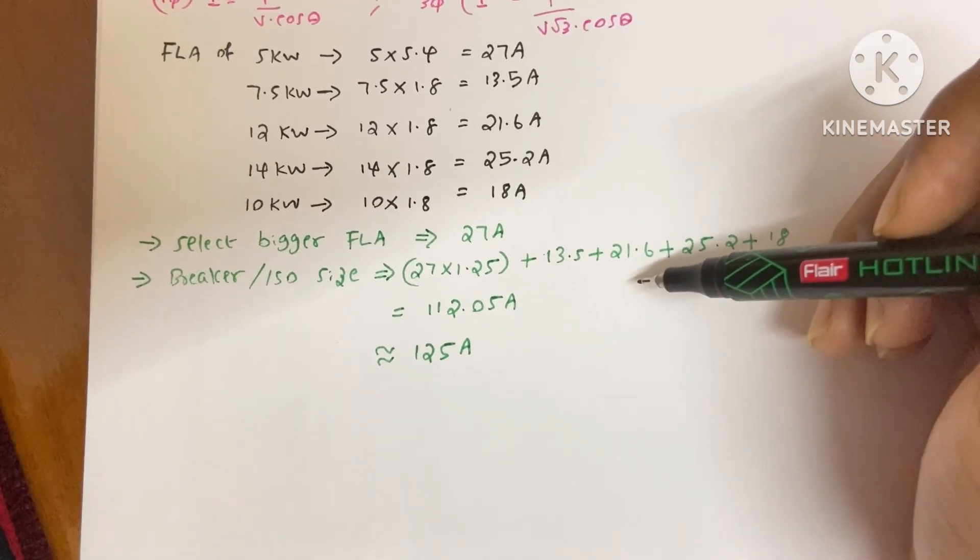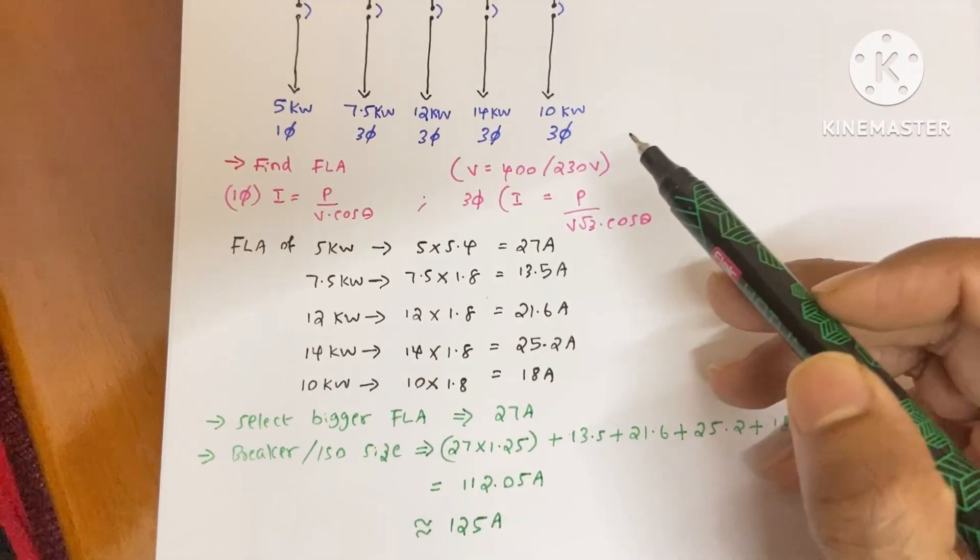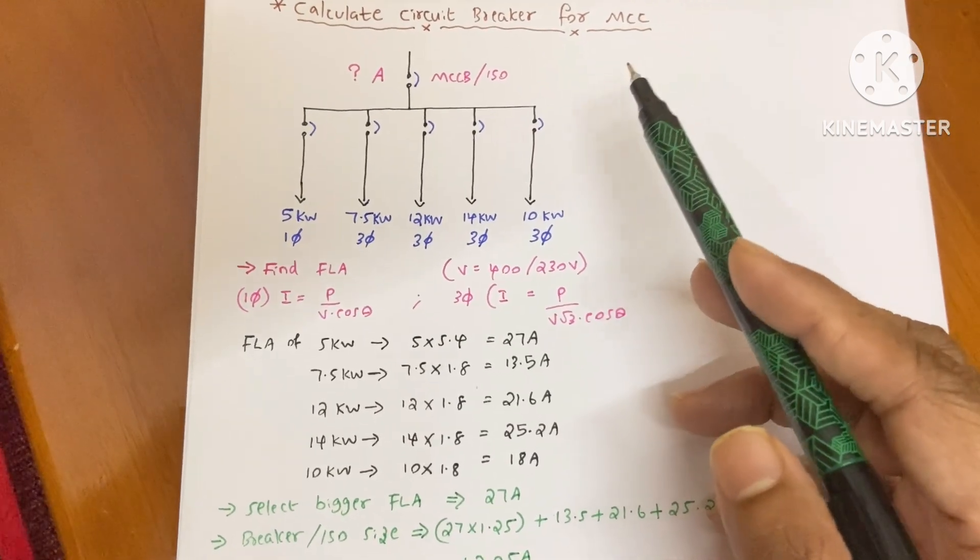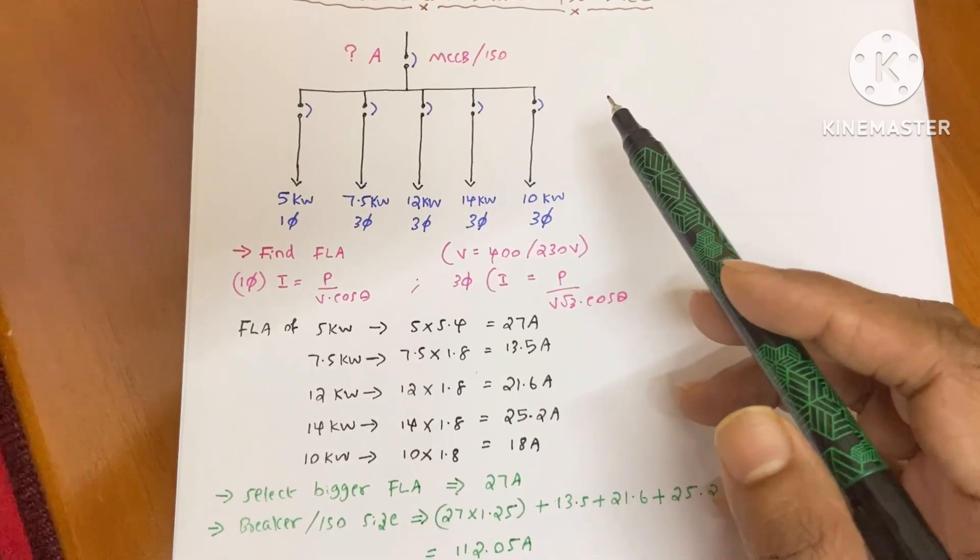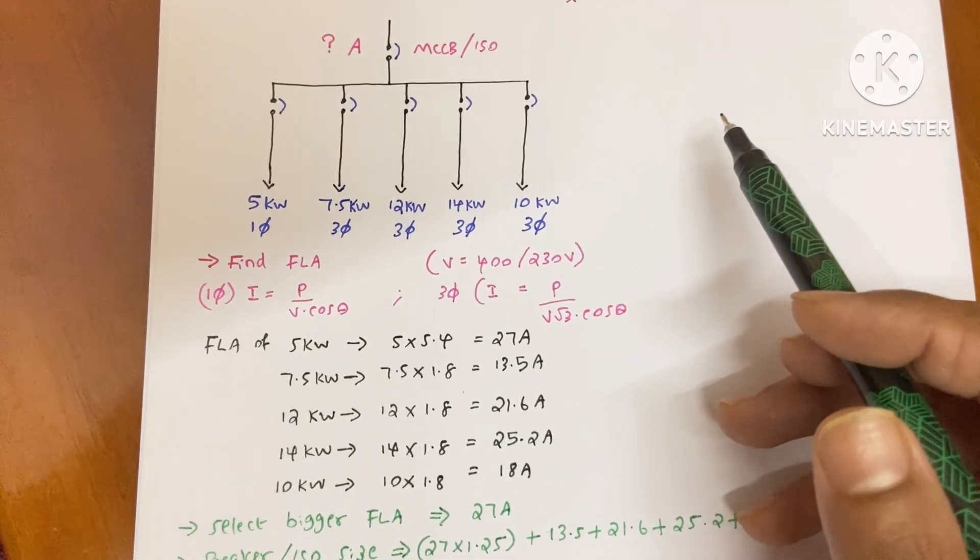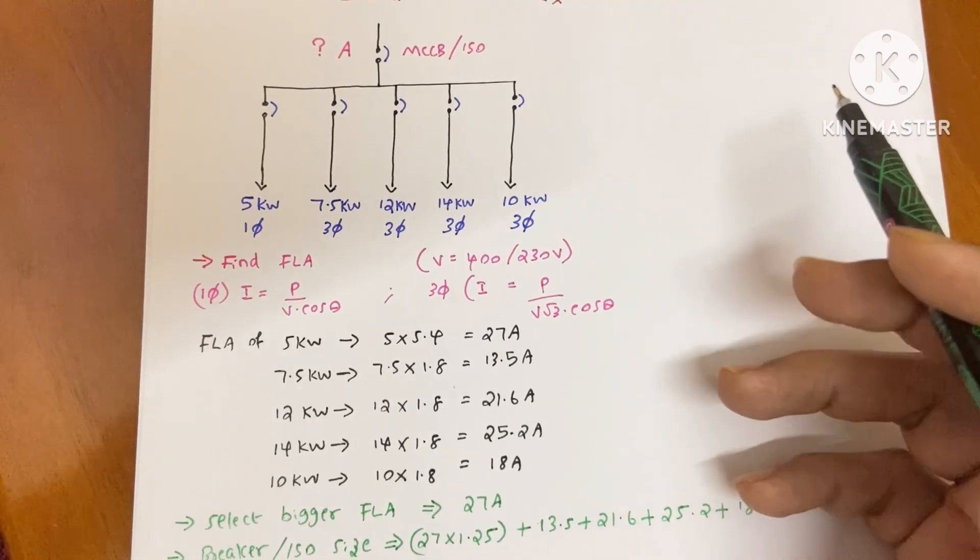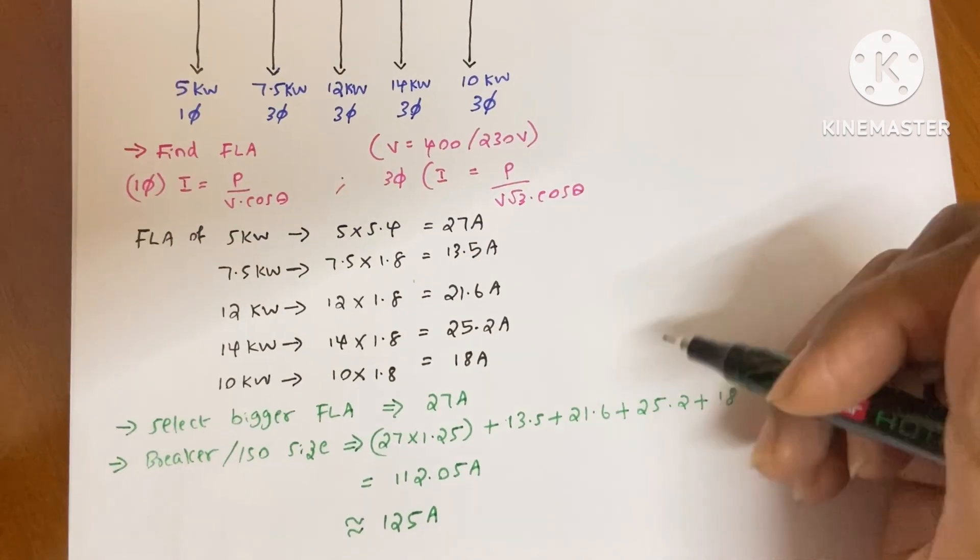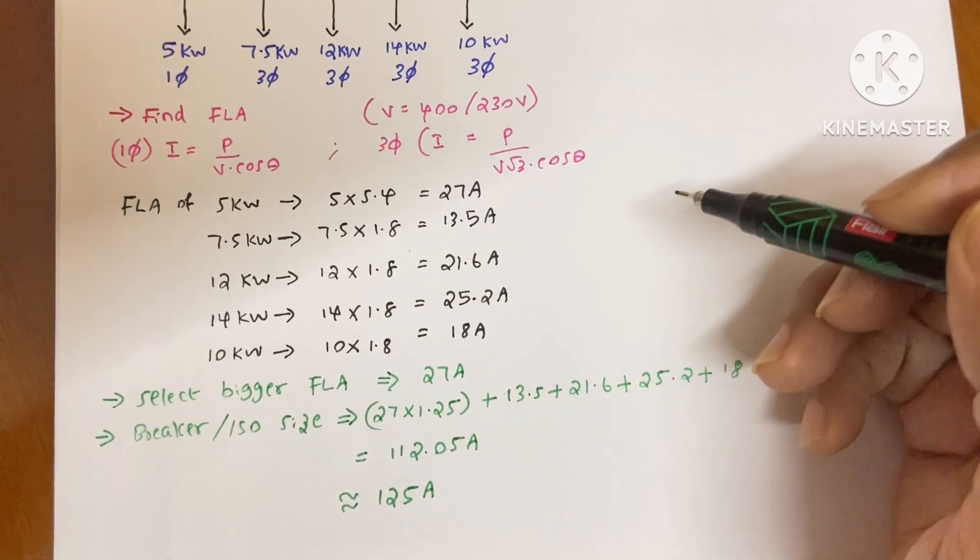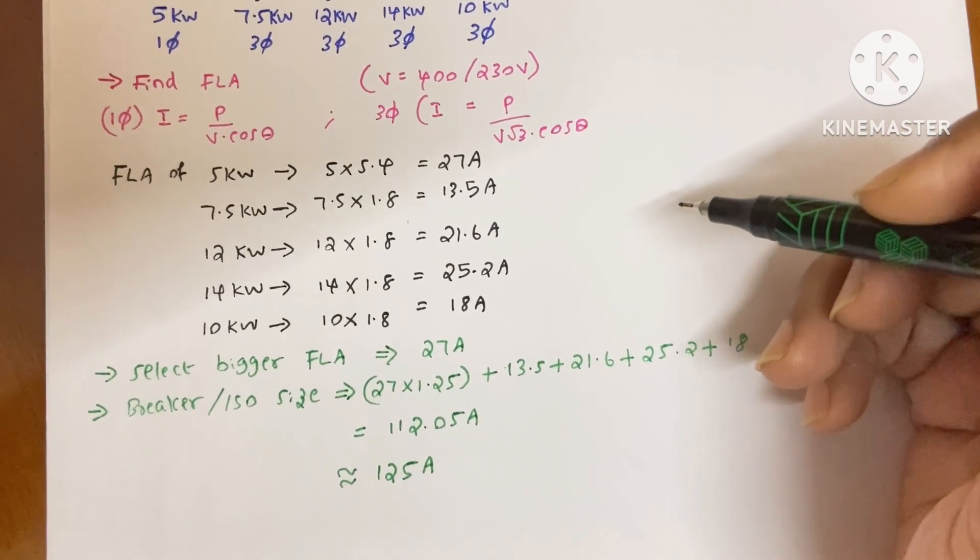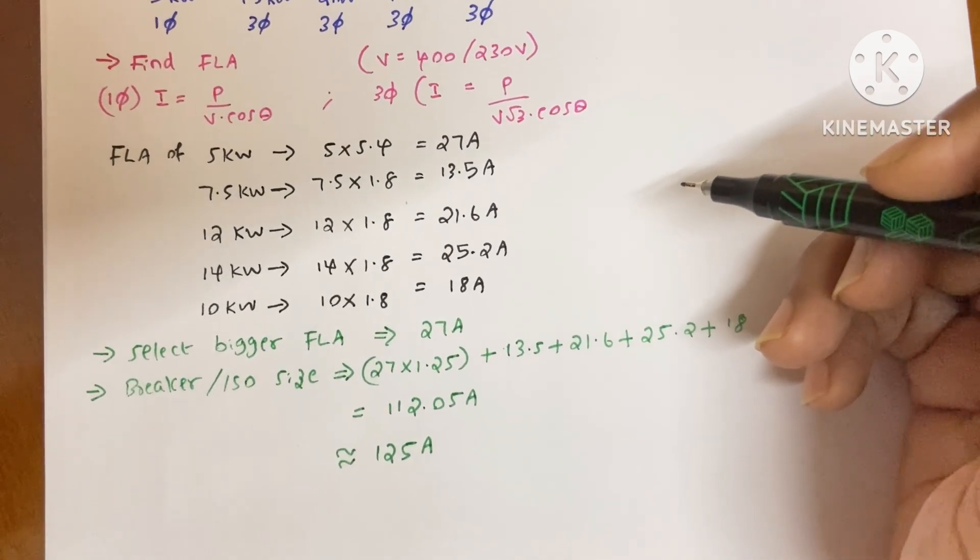This method is only applicable for the MCC, that means for motor control center. If you are going to find the incoming breaker for any other panel, for example for any SMDB or for any MDB, you should not use this method. For those panels you need to use some other methods that I will explain later in another video.